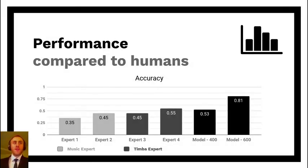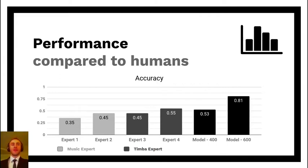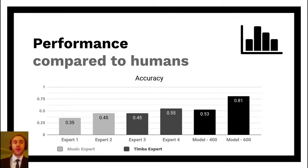My first CNN, which I ran with 400 data points, didn't perform that well — it got an accuracy only barely better than random chance. So I spent some hours listening through more songs and labeling more data. I retrained on 600 samples, and this significantly improved my performance.